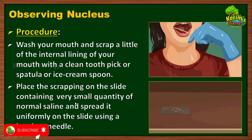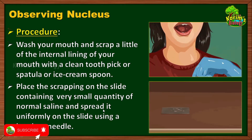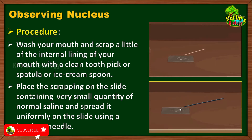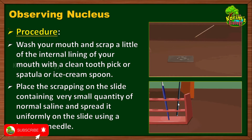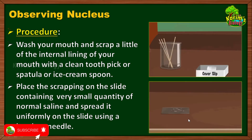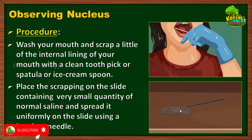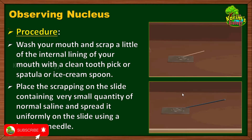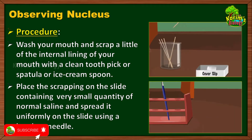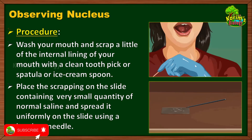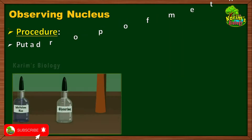The next thing we should do is spread the cells uniformly. After placing the cells on the drop, we have to uniformly spread them, because if you don't, all the cells will be in the form of a clump and you cannot see anything under the microscope. Take a needle and spread the cells uniformly so that the clumps get separated and cells can be clearly seen.